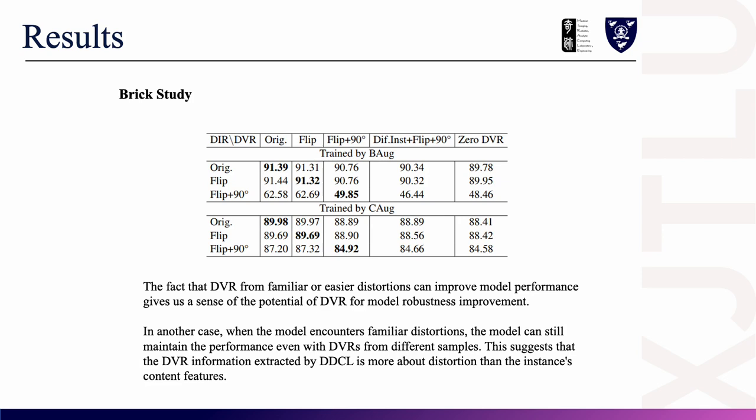I would like to present our proposed BRICS study. This study brings together DIRs and DVRs from the same instance or different instances under different distortions and then linearly evaluates them. We found that DVR from familiar or easier distortions can improve model performance. In another case, when the model encounters familiar distortions, it can still maintain performance even with DVRs from different instances. This suggests that the DVR information extracted by DDCL is more about distortion than the instance's content.